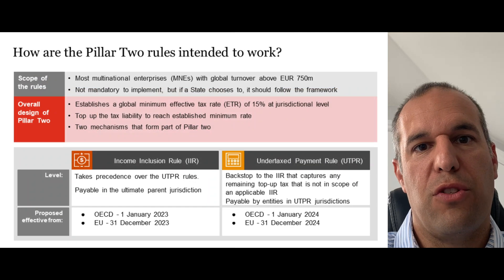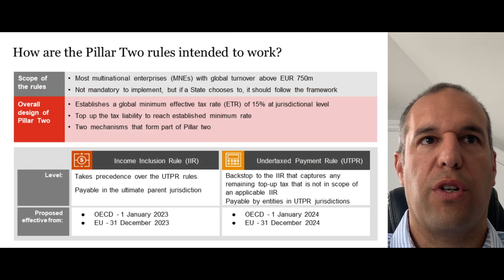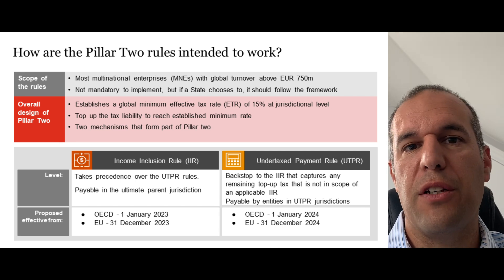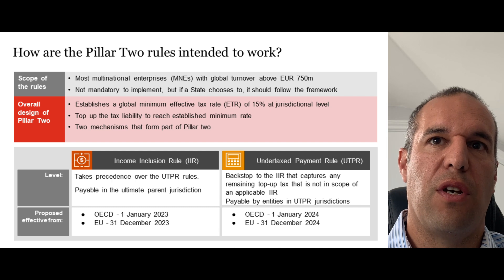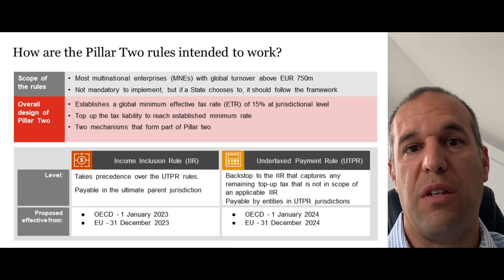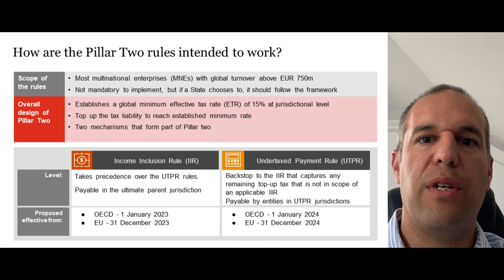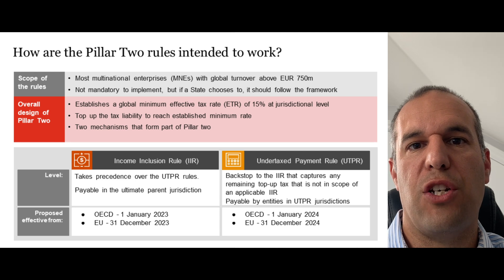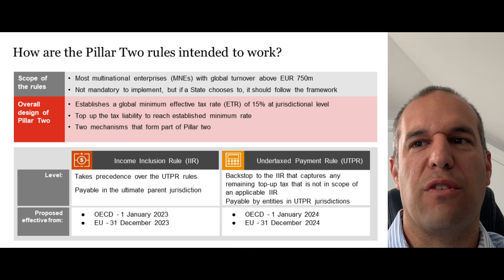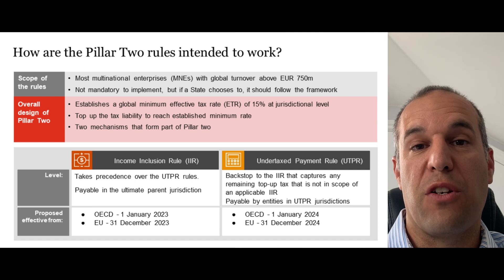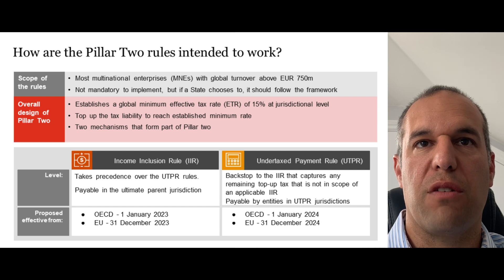Pillar 2 affects most multinationals with global turnover of above €750 million. Importantly, the OECD is a not-for-profit organization and cannot mandate that countries implement these rules — it's a local legislation issue. But if countries choose to implement, they should follow the framework developed. The overall design of the Pillar 2 rules is to establish a minimum amount of tax — 15% — paid at a jurisdictional level.